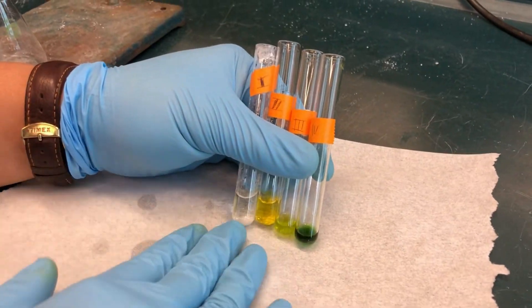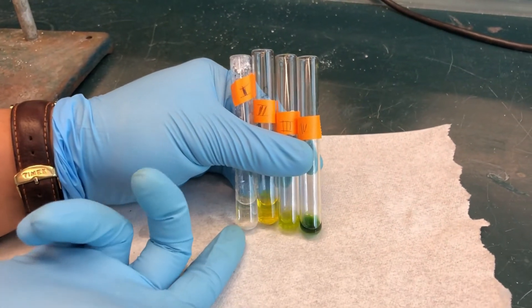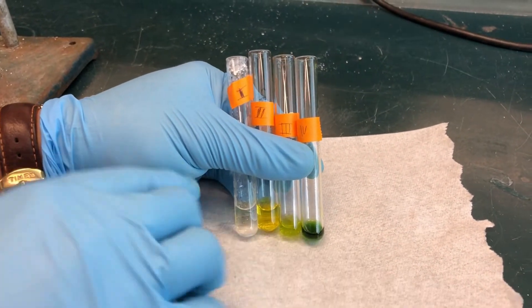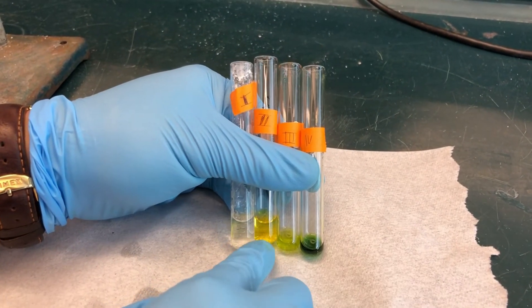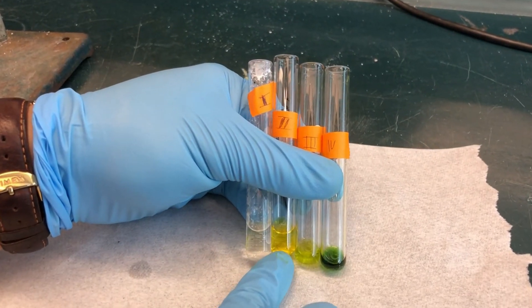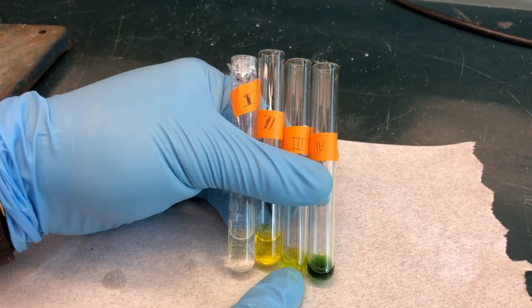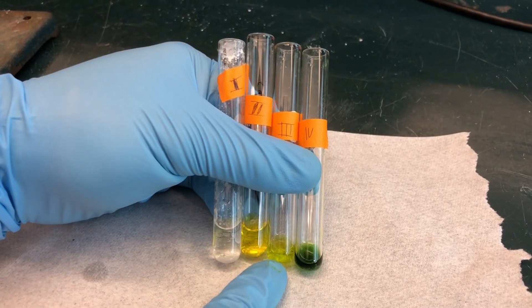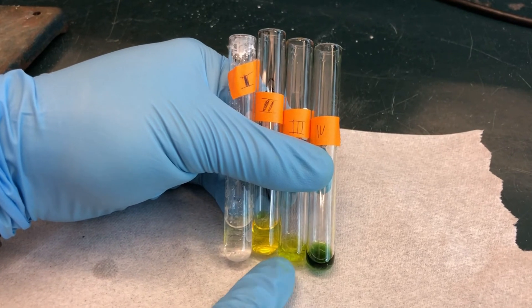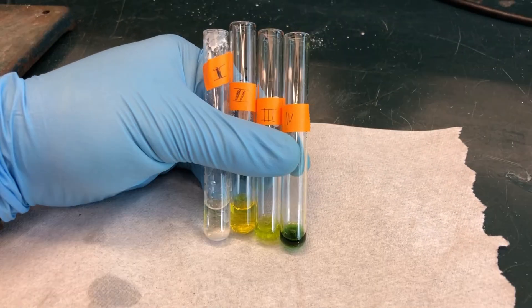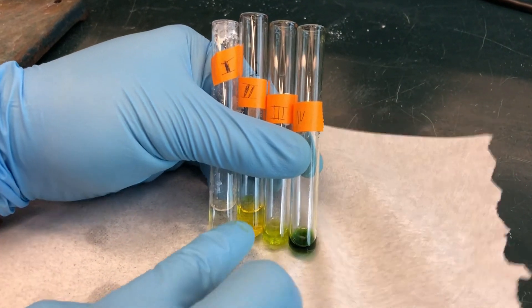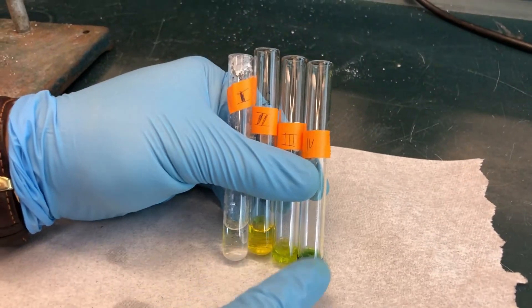Here you can see our four fractions. Test tube 1 has the petroleum ether, which is colorless. Test tube 2 has our yellow pigment. The intermediate is test tube 3. You can see it is between the yellow and the green color. And test tube 4 showing the green pigment. Test tube 2 and 4 would be used in the following TLC lab, which is not covered in this video.